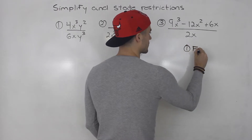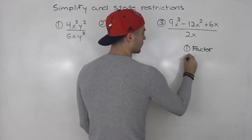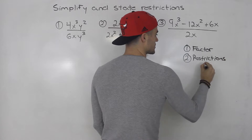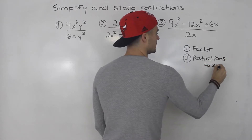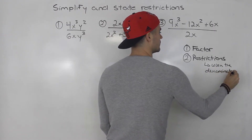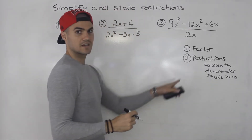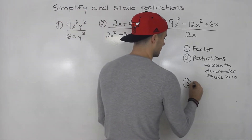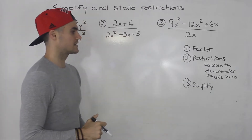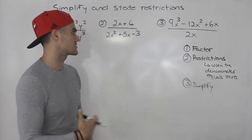First, I want to make sure that everything is factored in every numerator and every denominator. Then, once everything is factored, I want to state restrictions. Basically, restrictions are when the denominator equals zero. And then once I've stated the restrictions, I can simplify. You don't want to simplify before stating the restrictions, because then you might miss out on factors that you have to include in the restrictions.